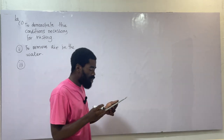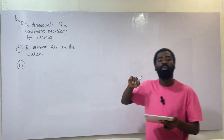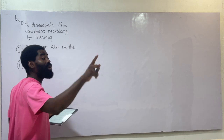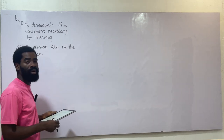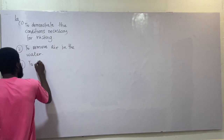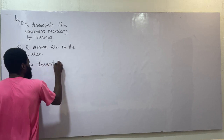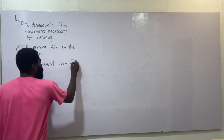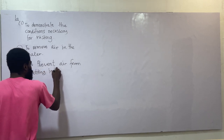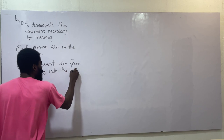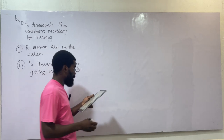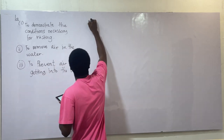Question 1a-iii: State the function of the oil on top of the water in test tube B. The role of the oil is to prevent air from getting into the water.